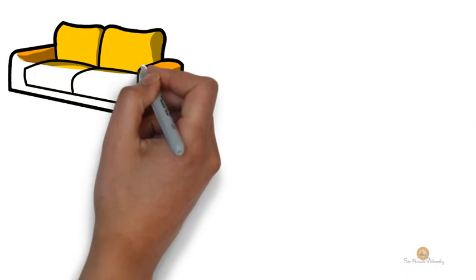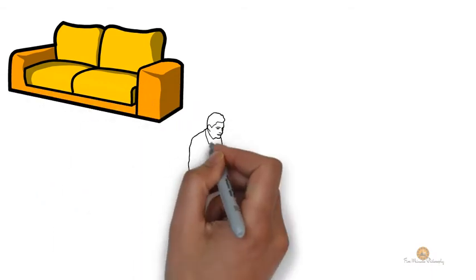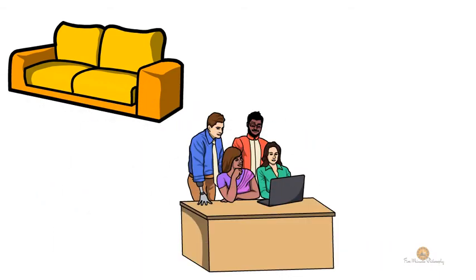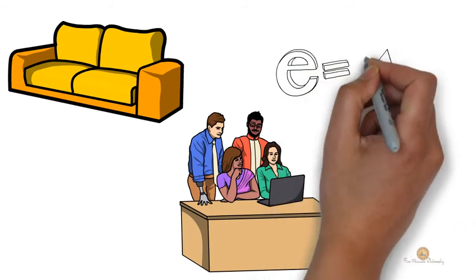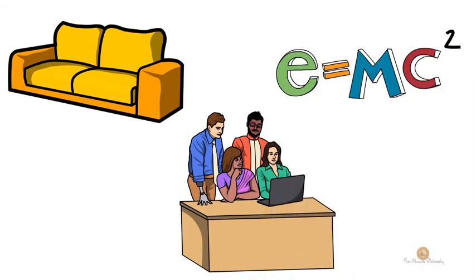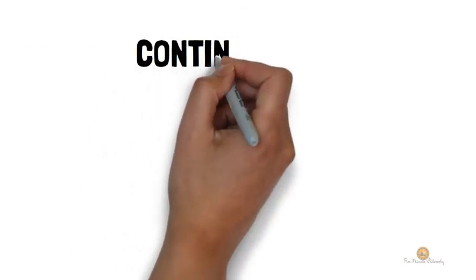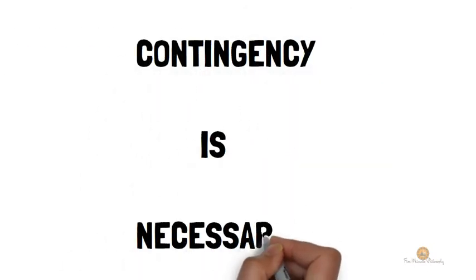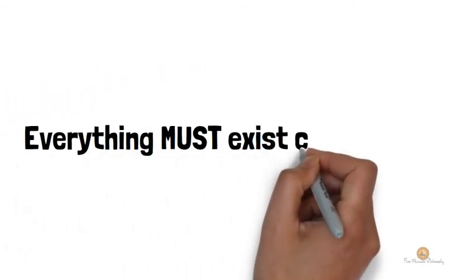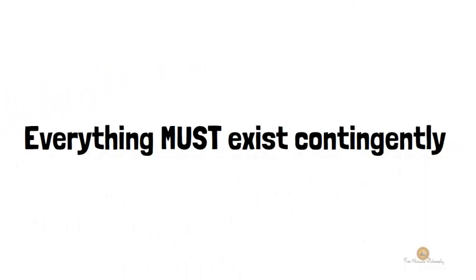According to Meillassoux, everything is contingent, from objects, to people, to scientific laws. There is nothing that must be, and must be in just the way that it is. More precisely, Meillassoux believes that the contingency of everything is necessary. It is not that everything happens to be contingent, but rather that everything must exist contingently.